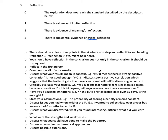Discuss what your results mean in context. For example, just saying 'r = 0.8 means there is strong positive correlation' is not good enough. Instead, say 'r = 0.8 indicates strong positive correlation, which suggests that the hotter it gets, the more ice cream I will sell.' That's discussing in context. Then critically evaluate: 'r = 0.8 suggests hotter means I sell more ice cream, but where does it end?'